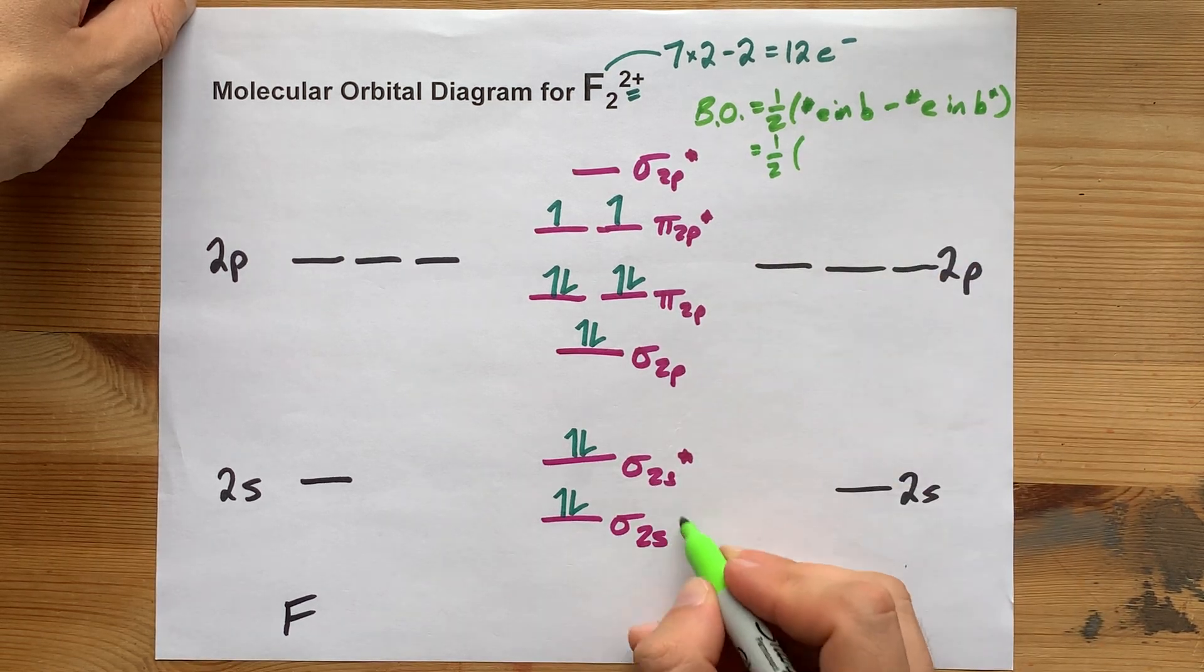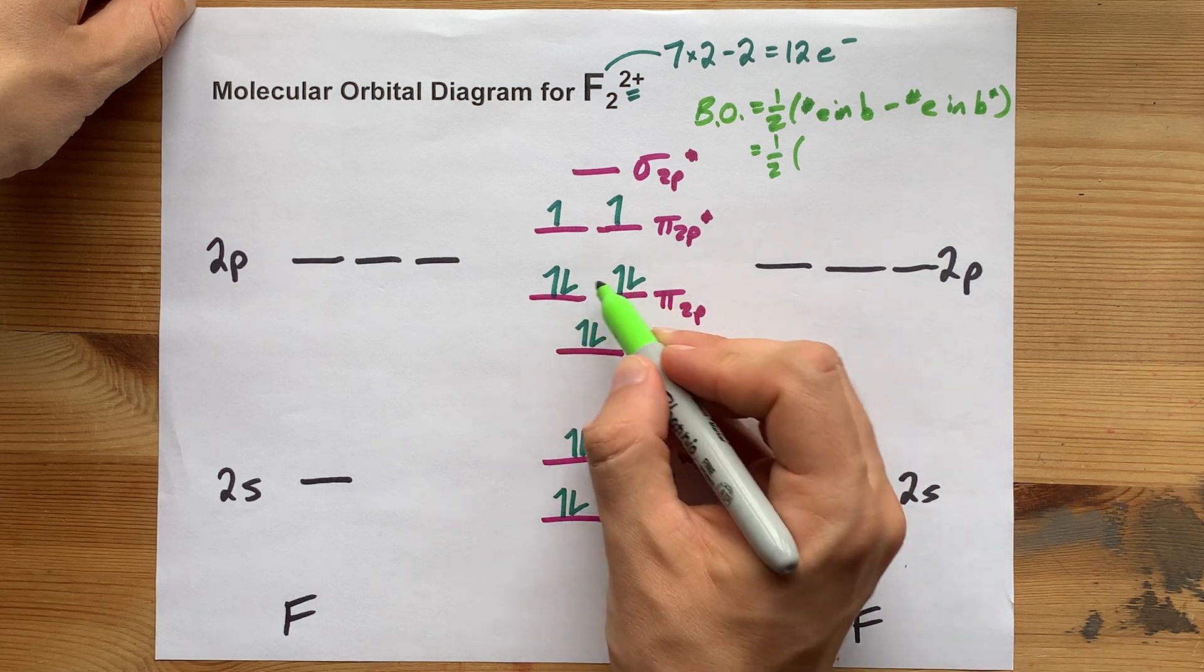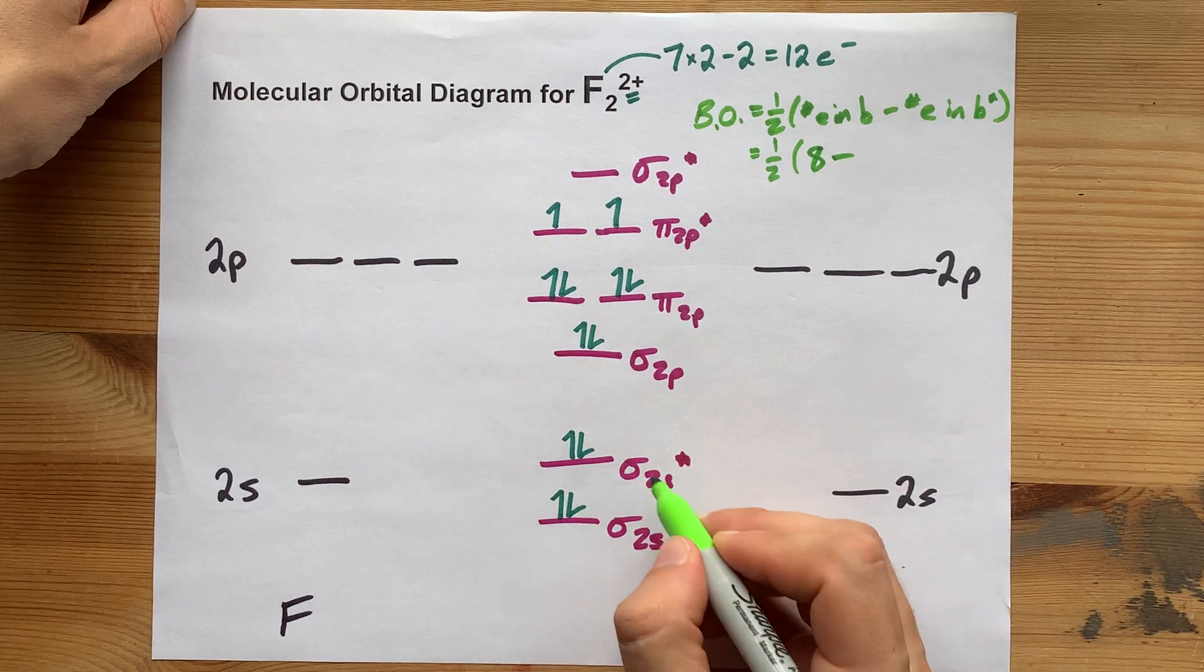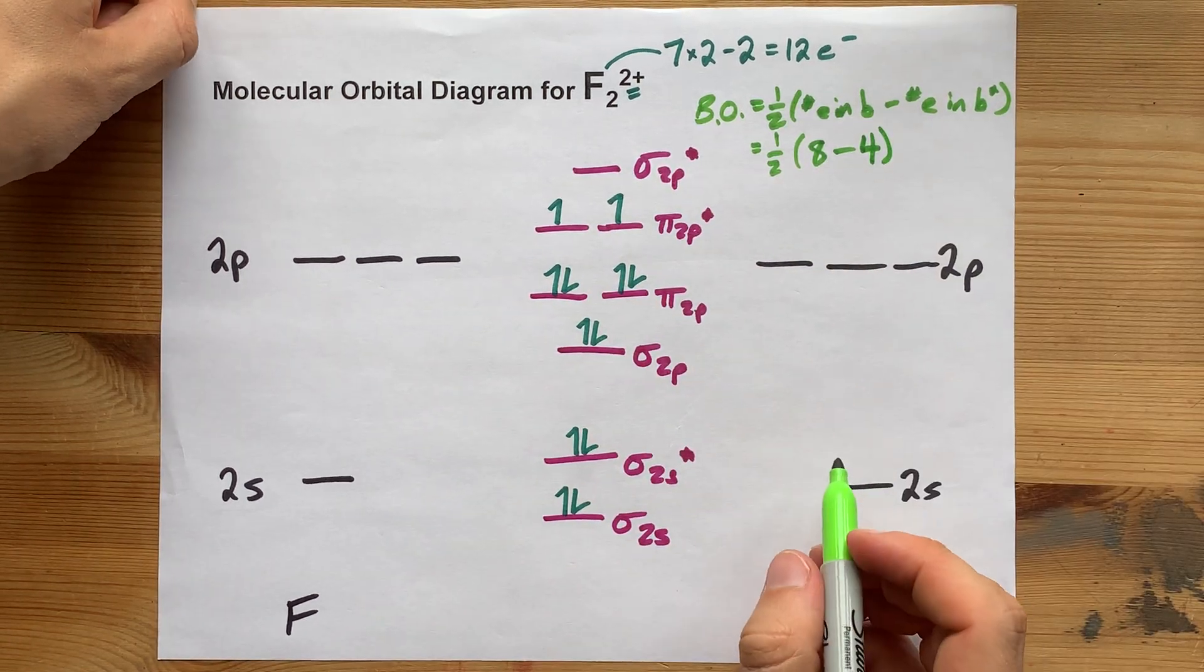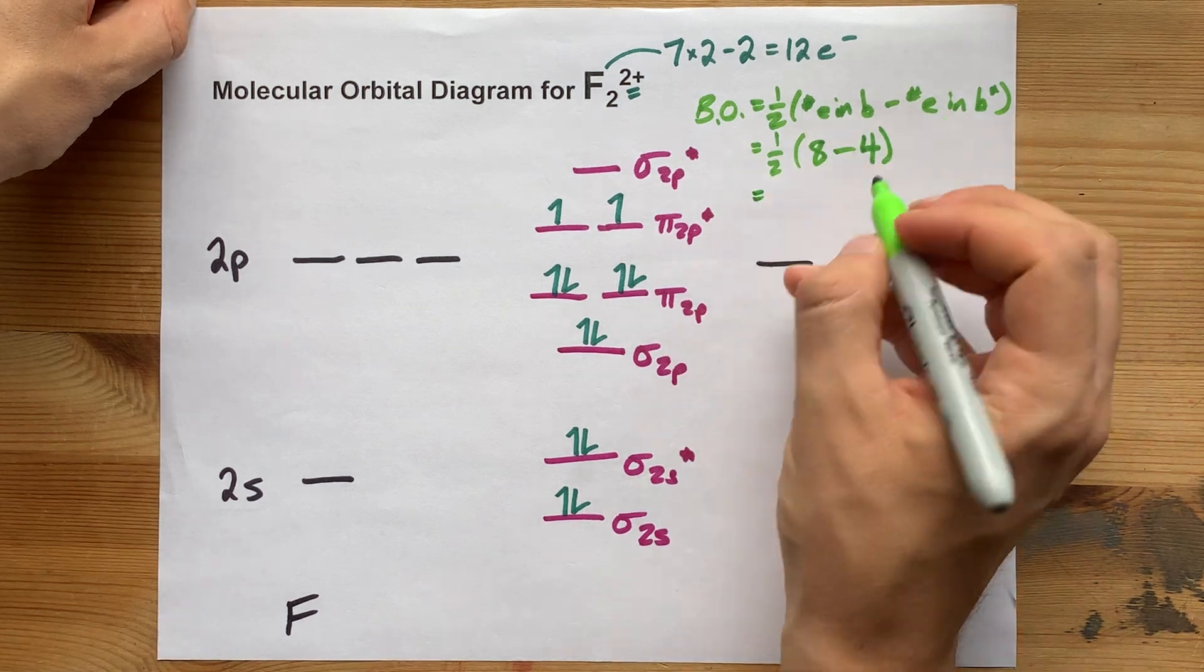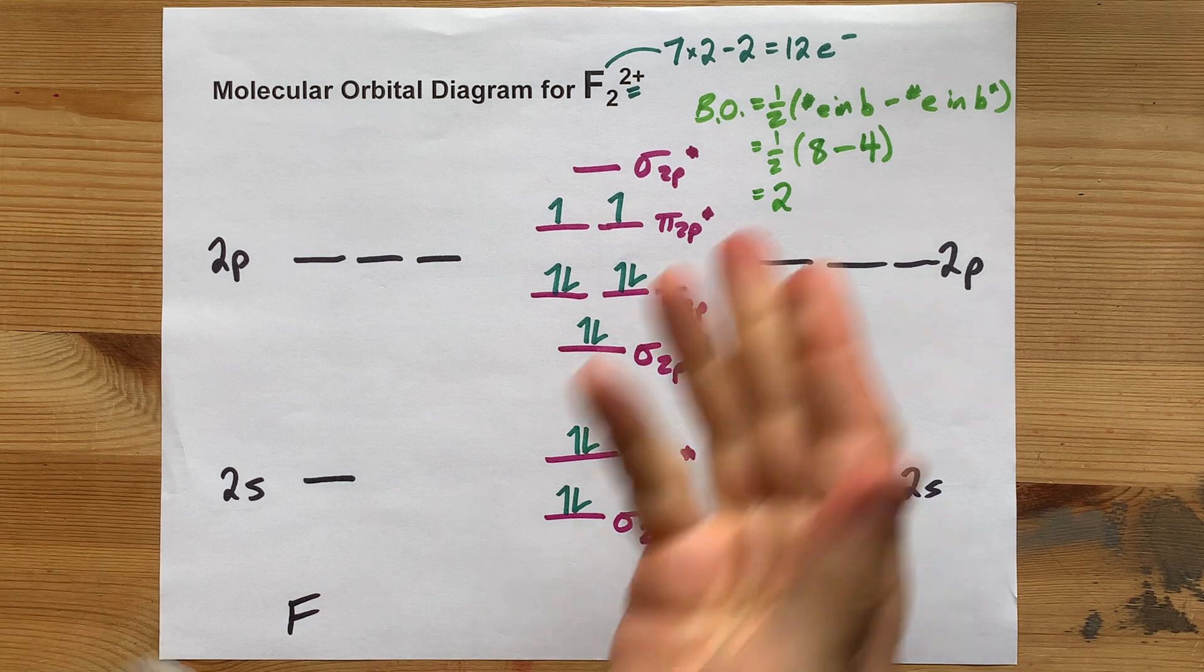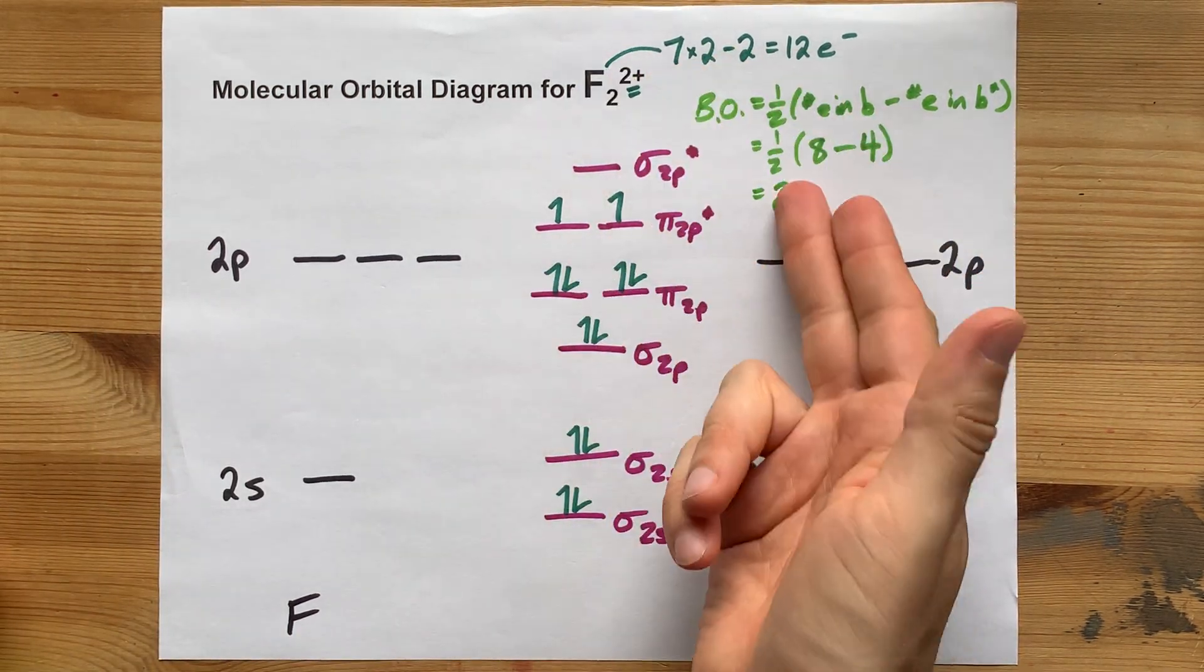Bonding means no asterisks. So 8 electrons in the bonding orbitals, 4 electrons in anti-bonding orbitals. 8 minus 4 is 4, cut it in half is 2. That's a nice whole number. That implies to me that this is a double bonded and stable species. If there was a 0.5 here, it would probably not be stable.